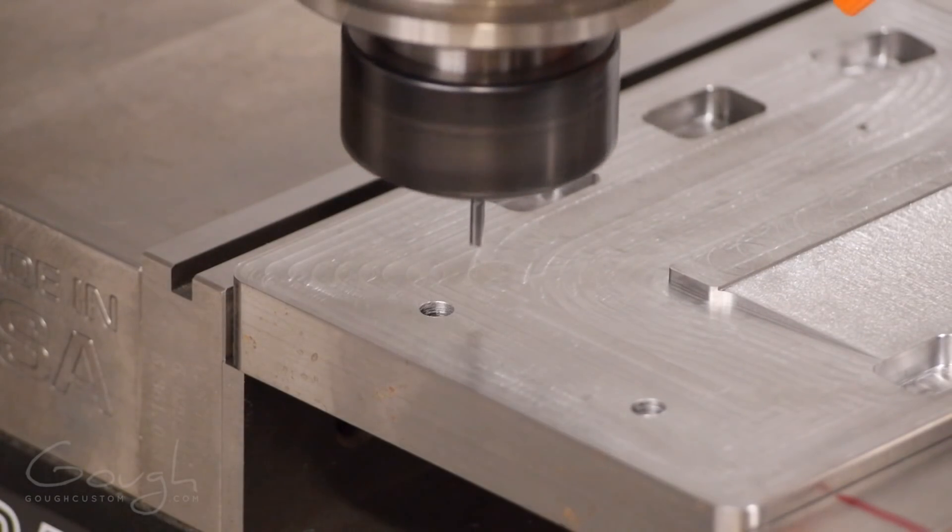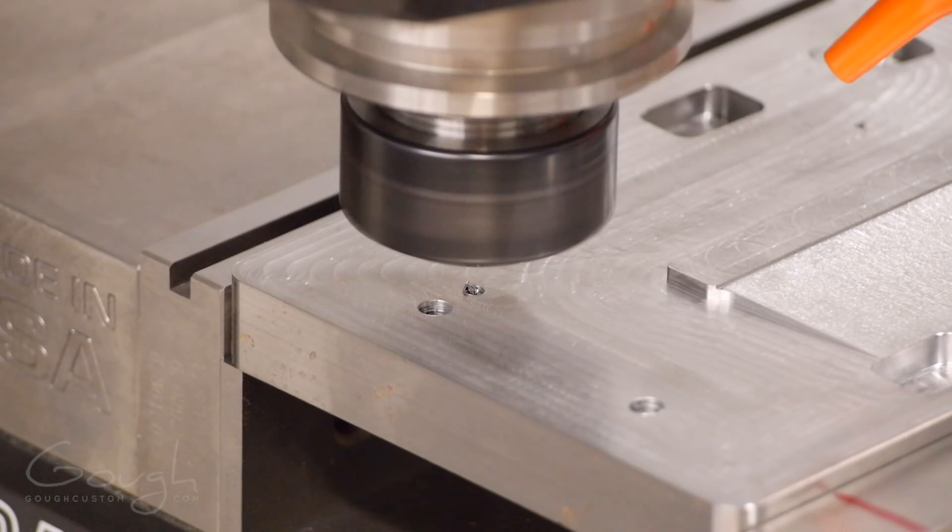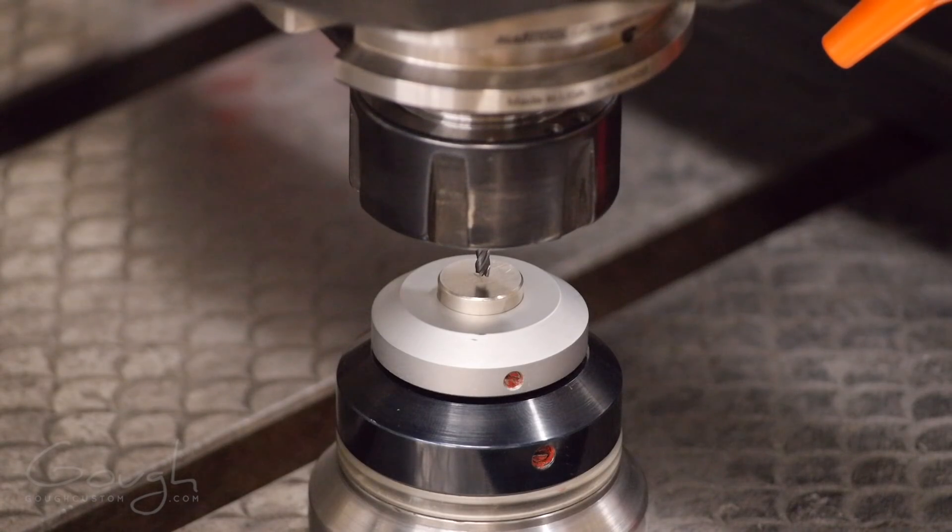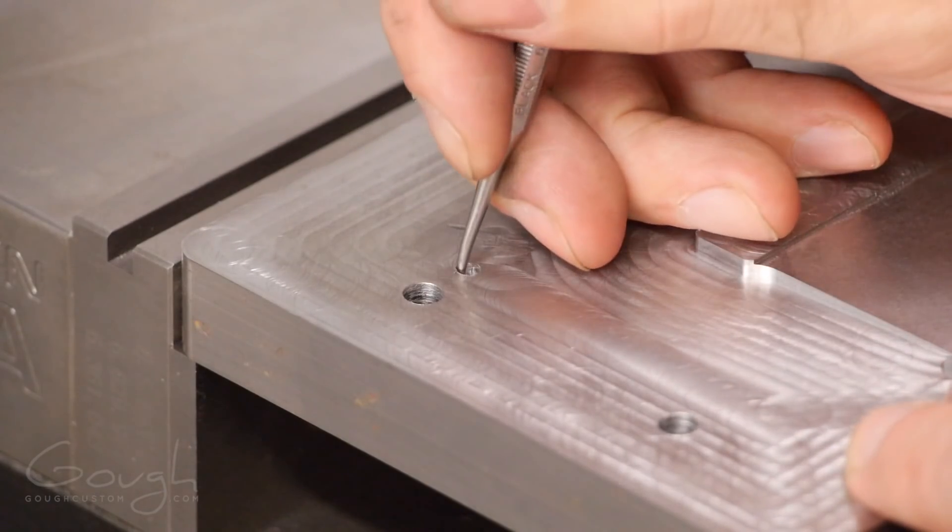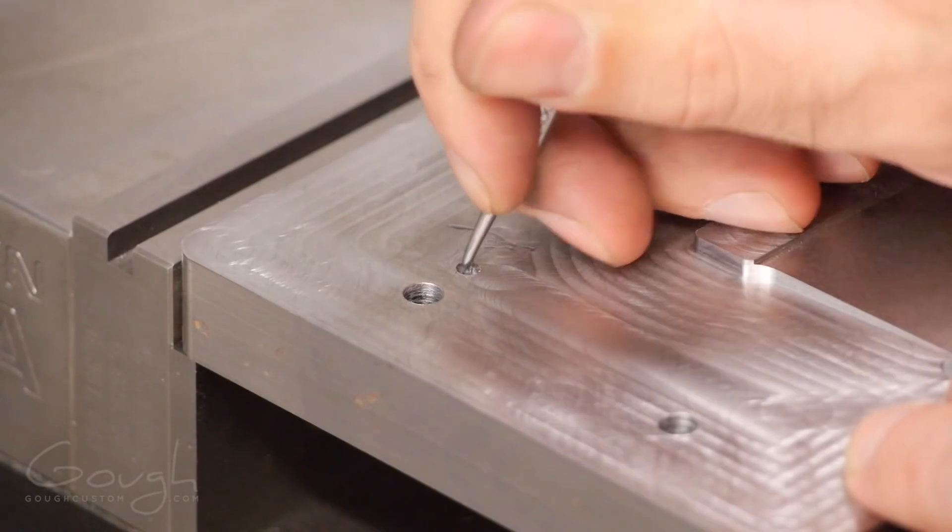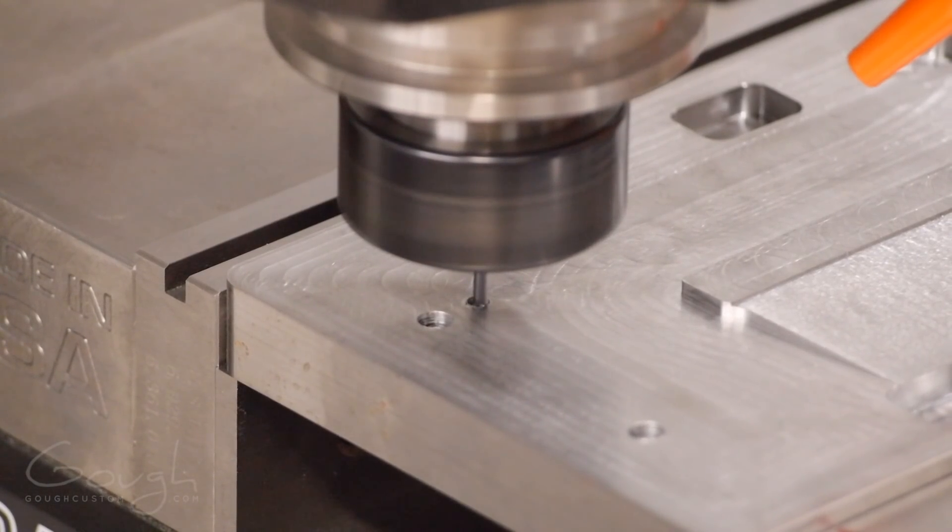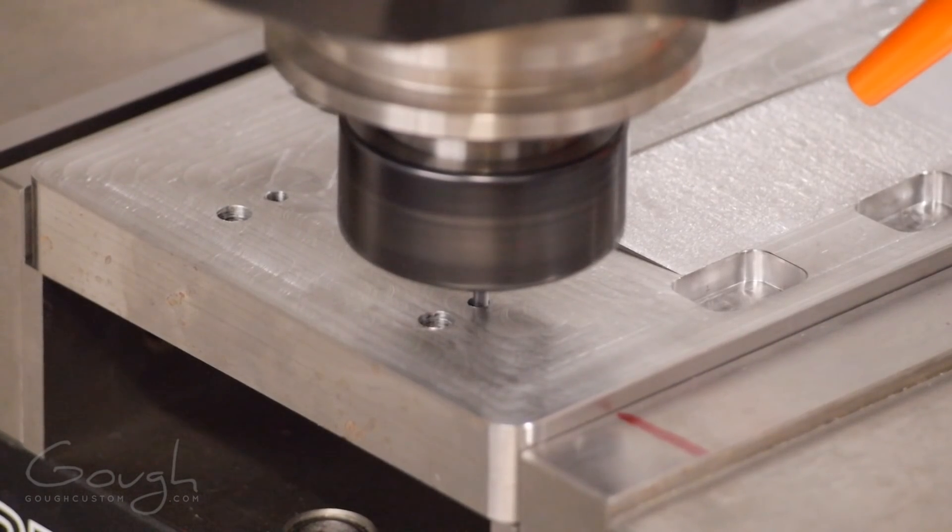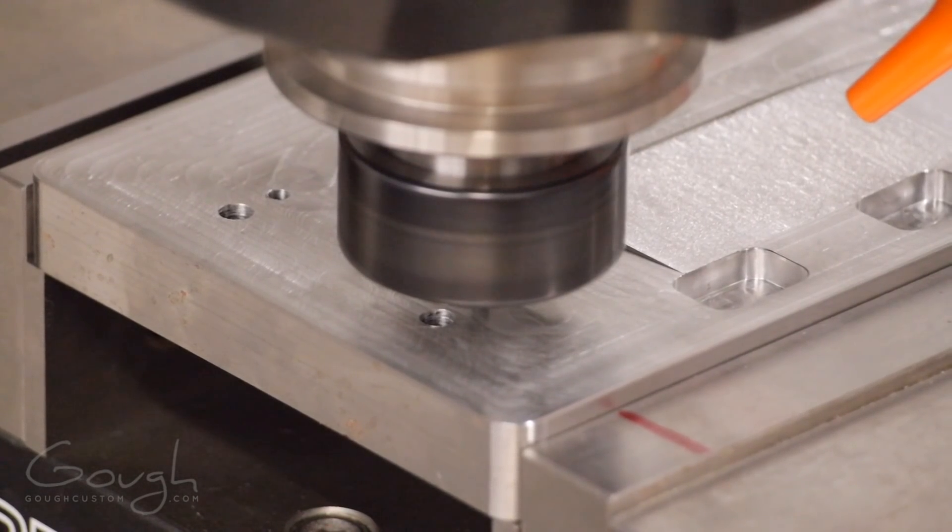Have you ever wondered what the quickest and easiest way to spend twenty bucks is? There you go. Small delicate tools like this are really intolerant of getting your feeds and speeds wrong. Clearly in this case I was feeding a little bit too aggressively so time for a new tool and a second attempt. Before I come in for the second attempt though I need to make sure there's no carbide chunks left at the bottom of that hole otherwise I'm just going to break the new end mill straight away. These two little holes are the primary locating feature that will make sure the blades are in exactly the right place.